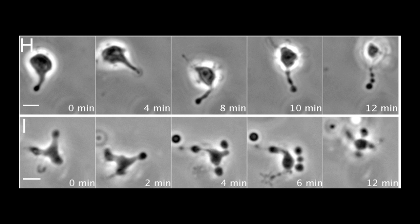First of all, the production of tubules which extrude from the parent cell and then break down into separate progeny. Or clusters of blebs which again are extruded from the parent cells.